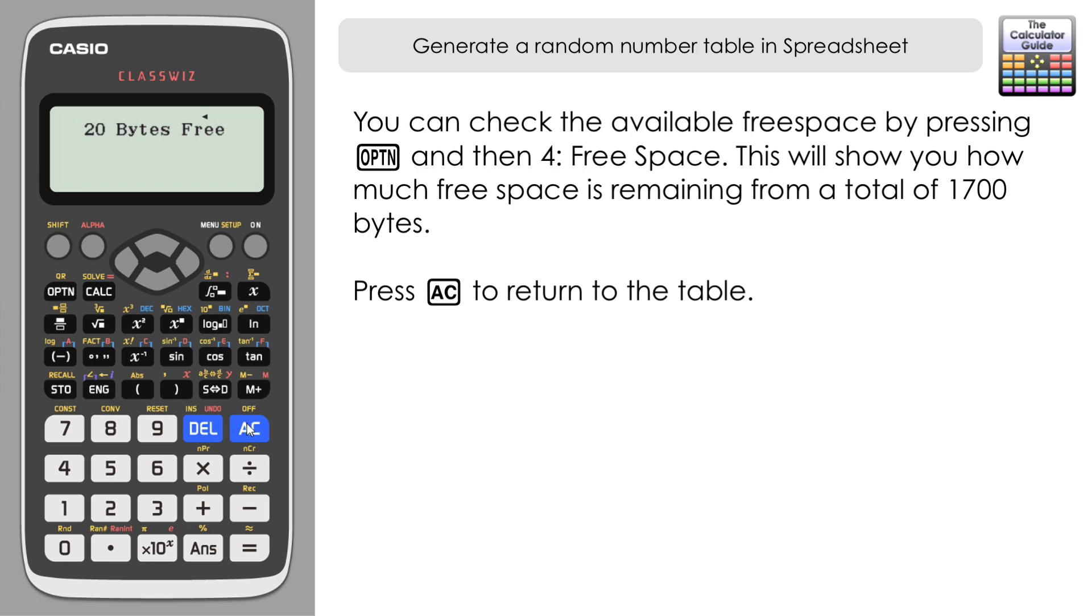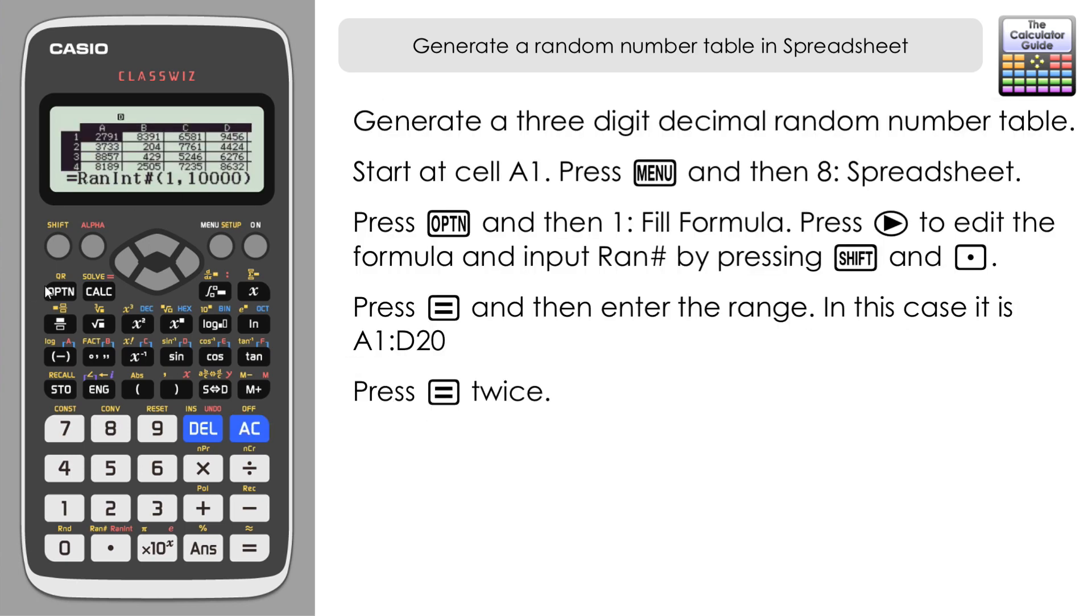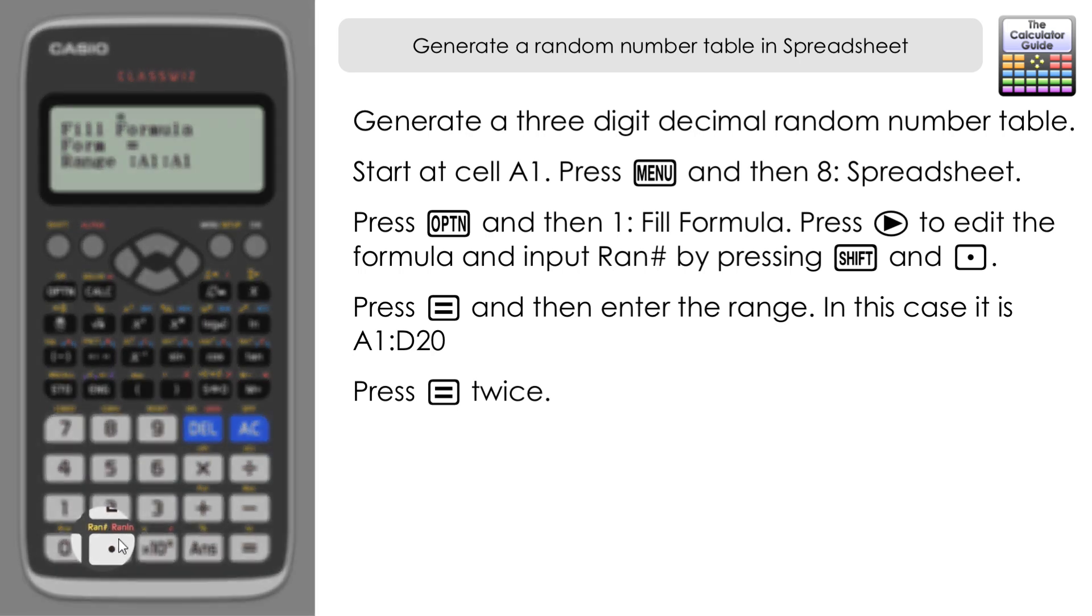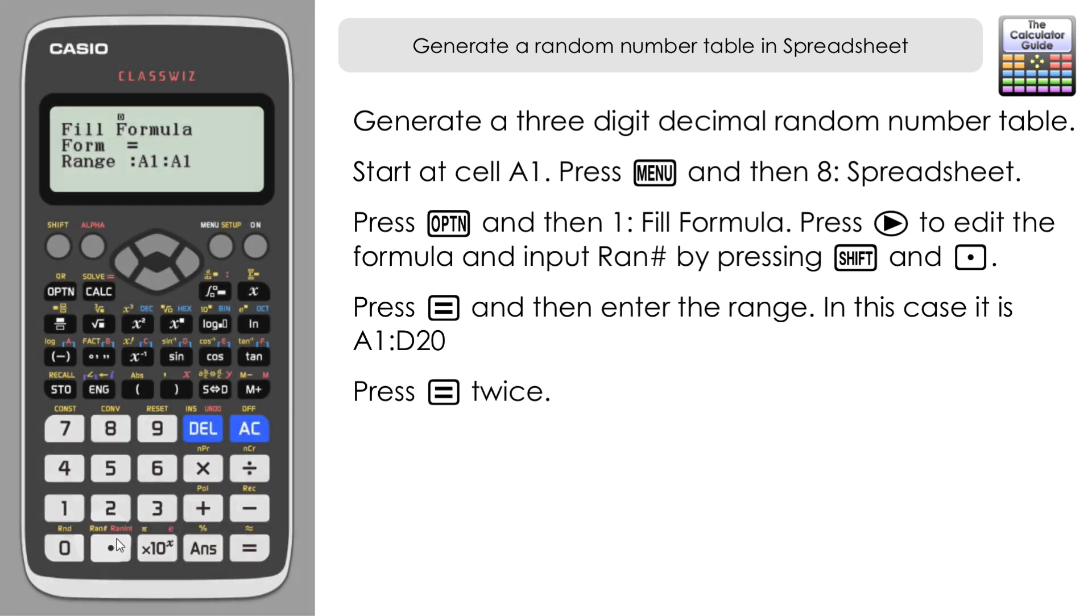I'll just show you one last variation of a random number table. If you press Option and Fill Formula on cell A1, just delete that and that is just using random number, it's indicated with Ran#. This will generate a random three decimal number, so it's got a number with three decimal places.